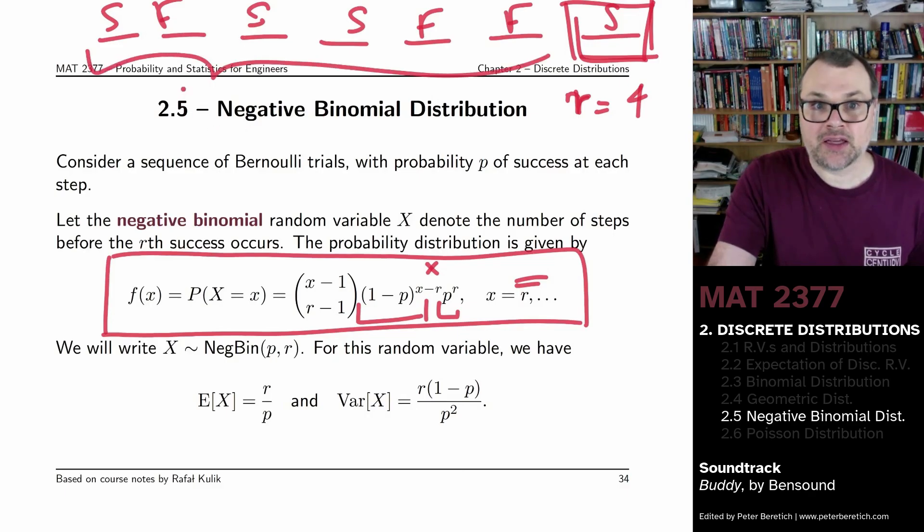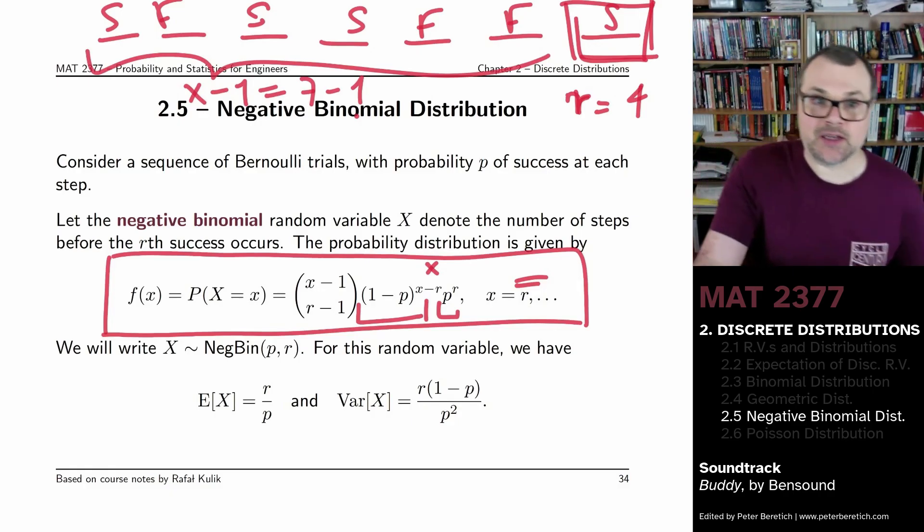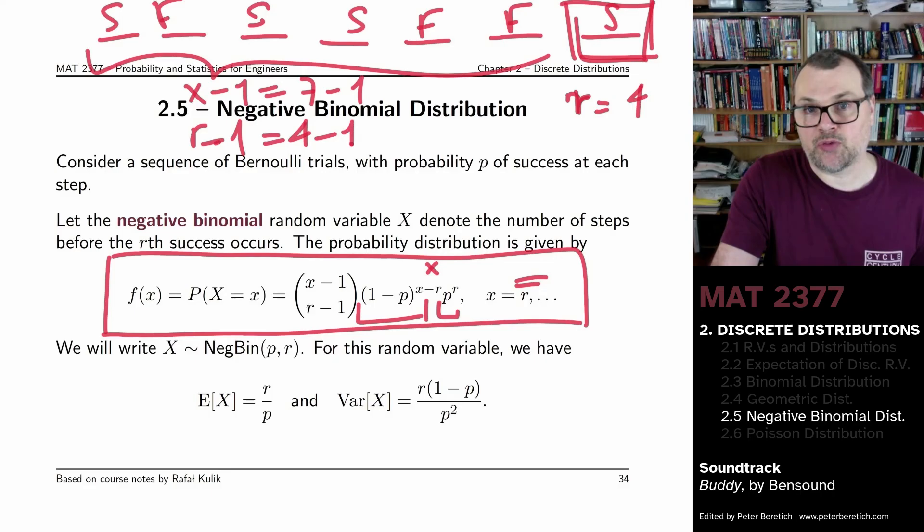So here we have X minus 1 trial, which in this case would be 7 minus 1 trials. And there's got to be R minus 1, which would be 4 minus 1 successes.